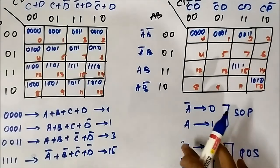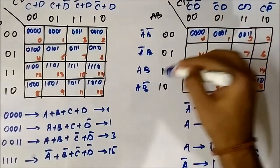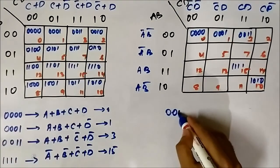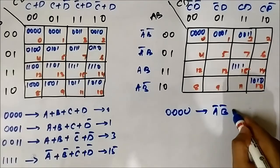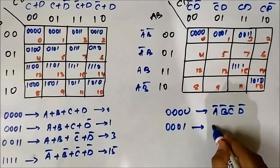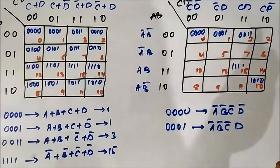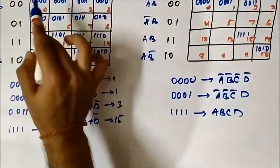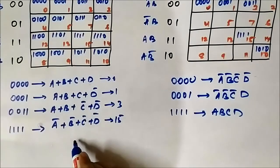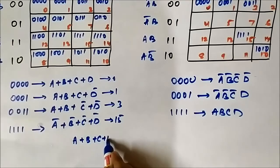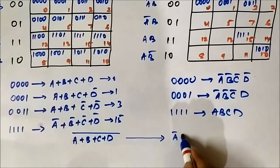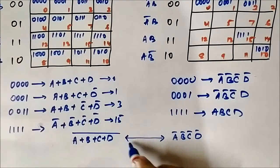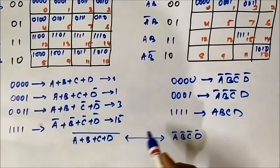In SOP format, the same cell 0000 is written as A̅B̅C̅D̅ (min term). In POS format, 0000 is written as A or B or C or D (max term). And the cell 1111 in SOP is A̅B̅C̅D̅, while in POS it is written as A or B or C or D. If we take a POS representation — for example A or B or C or D — and apply the whole complement using De Morgan's theorem, we get A̅B̅C̅D̅, which is the equivalent SOP min term representation.